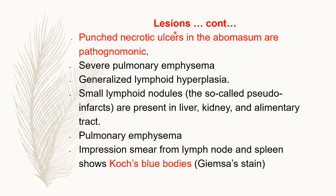Another pathognomonic postmortem lesion is punched-out necrotic ulcers in the abomasum — very characteristic and confirmatory for diagnosis. Other lesions include severe pulmonary emphysema, generalized lymphoid hyperplasia, and small lymphoid nodules called pseudo-infarcts present in the liver, kidney, and alimentary tract. Impression smears from lymph node and spleen showing Koch's blue bodies are also characteristic.